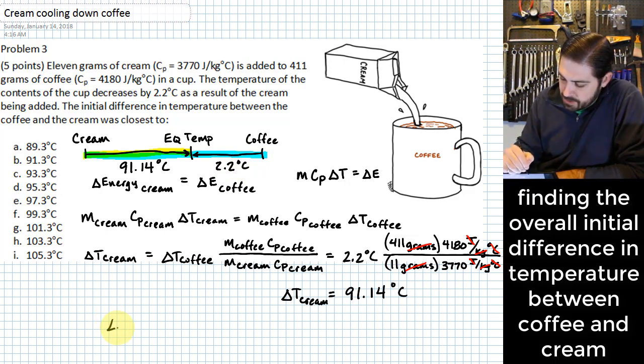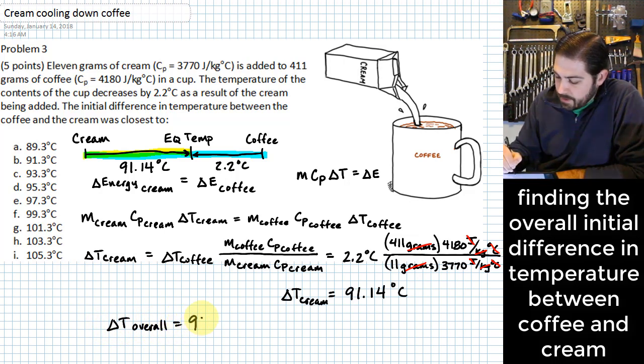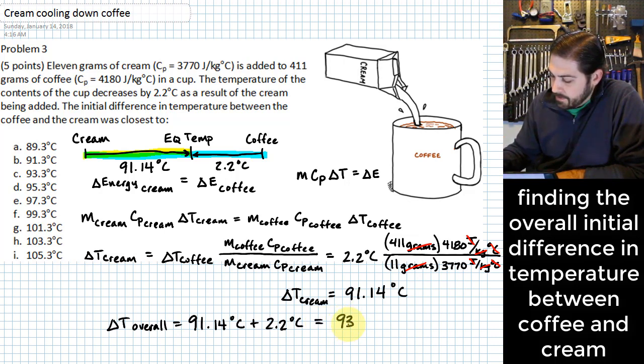So the change in temperature overall is going to be equal to 91.14 degrees C plus that initial temperature difference from the initial temperature of the coffee to the equilibrium temperature, 2.2 degrees C. And when we add all of that together, it ends up giving us 93.3 degrees C.